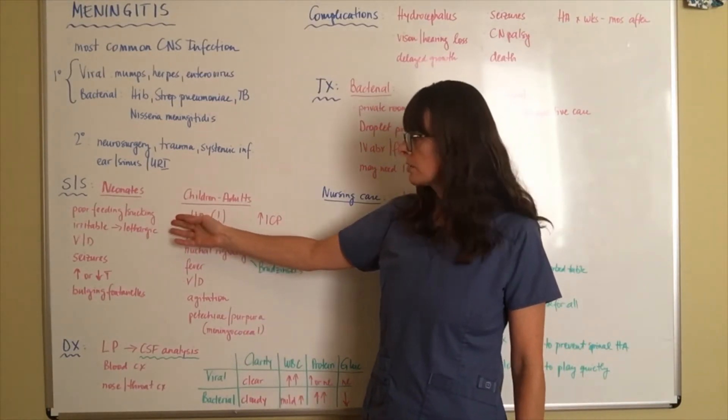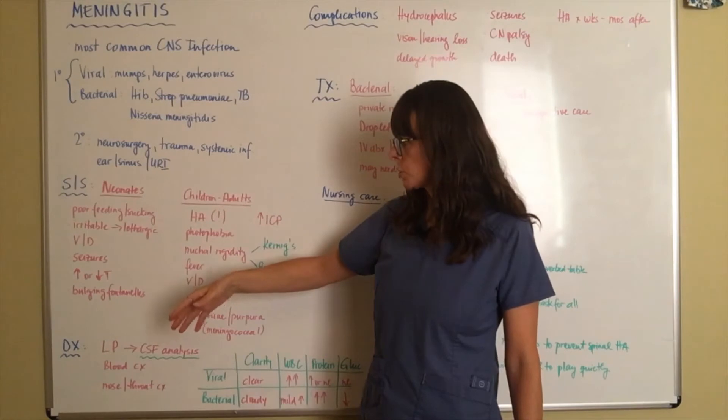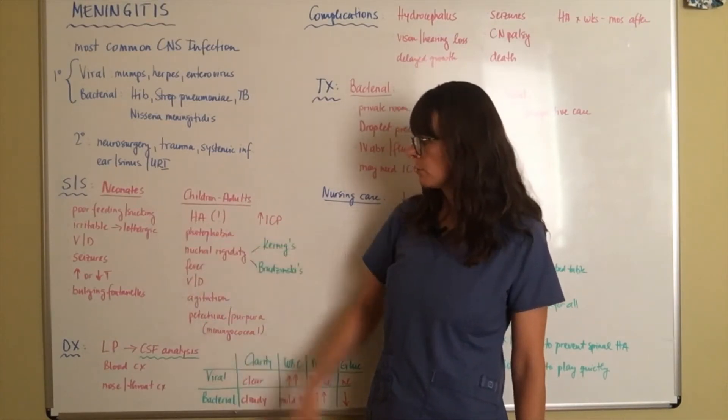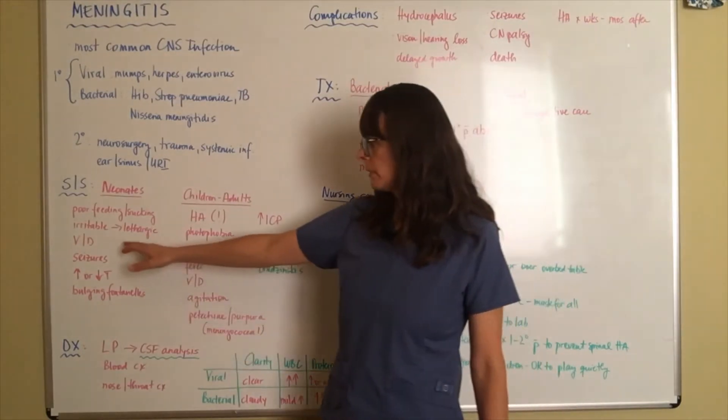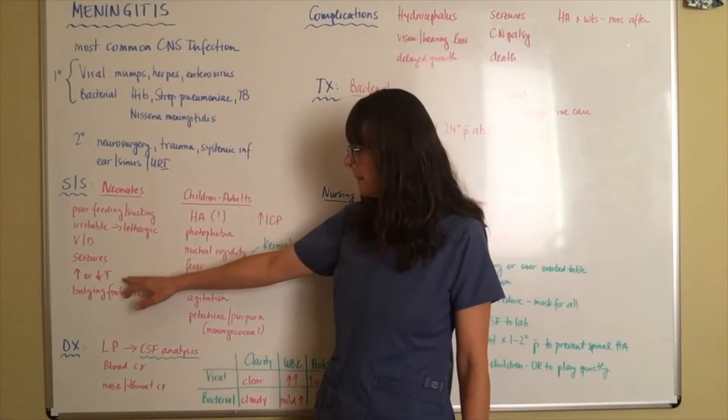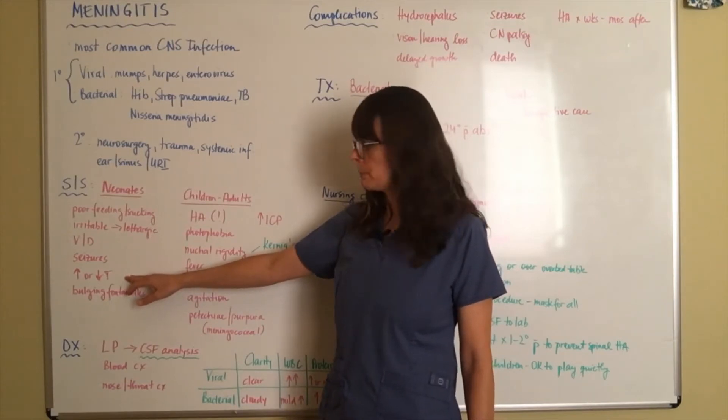They might be irritable but they might also be lethargic, so there's a wide spectrum here. They might have some vomiting and diarrhea, they might have seizures because the central nervous system is so irritated. They might be hypo or hyperthermic, so increased or decreased in temperature.